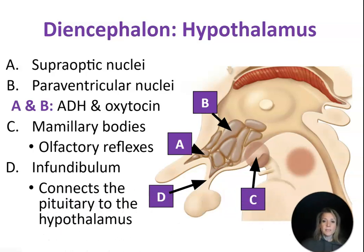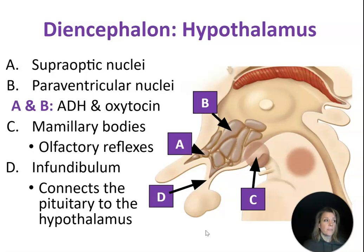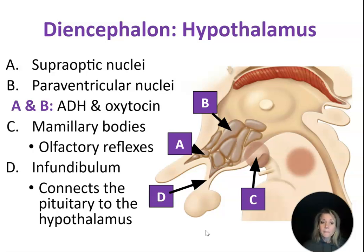The hypothalamus has a lot of different nuclei — different clusters of neurons that are going to synthesize and secrete different hormones. The supraoptic nuclei synthesize ADH, or antidiuretic hormone. The paraventricular nuclei are responsible for the synthesis of oxytocin. The mammillary bodies are responsible for olfactory reflexes — like when sensory information comes in and we respond, such as wrinkling our nose at a disliked smell. And the infundibulum is a stalk that connects the pituitary gland to the hypothalamus and plays an important role in how the pituitary gland works.